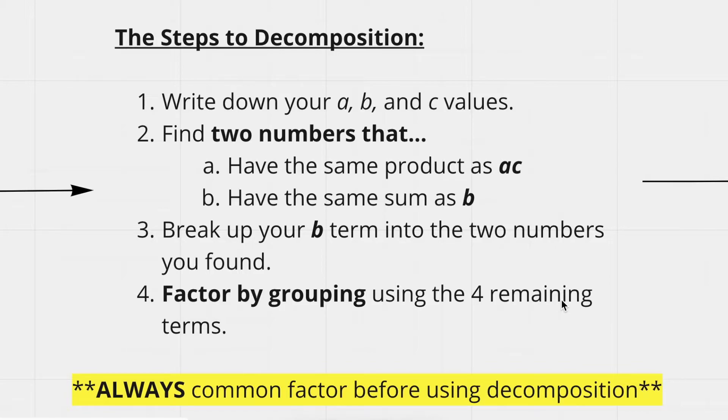Now once you find those two numbers that satisfy both those conditions, you're going to break your b term up into those two numbers that you found. So let's say if your b term is originally 9, and the two numbers you find that work are 5 and 4, you're going to break up that b term into plus 5 plus 4.